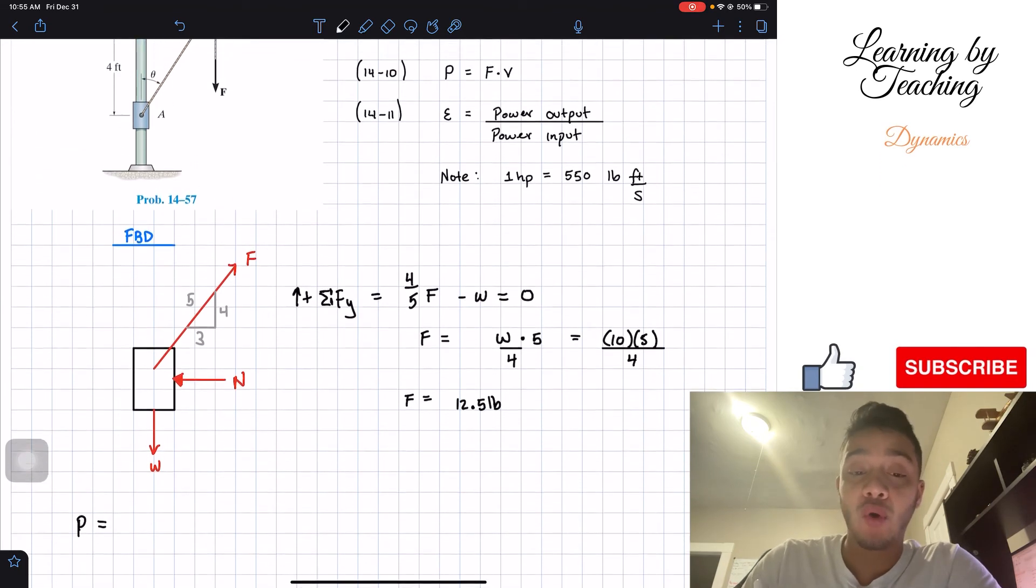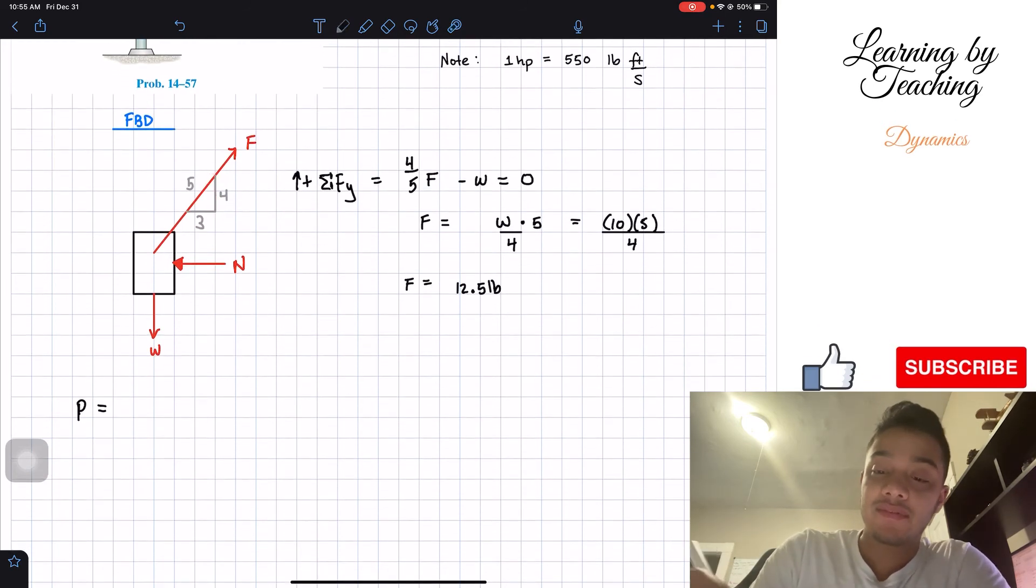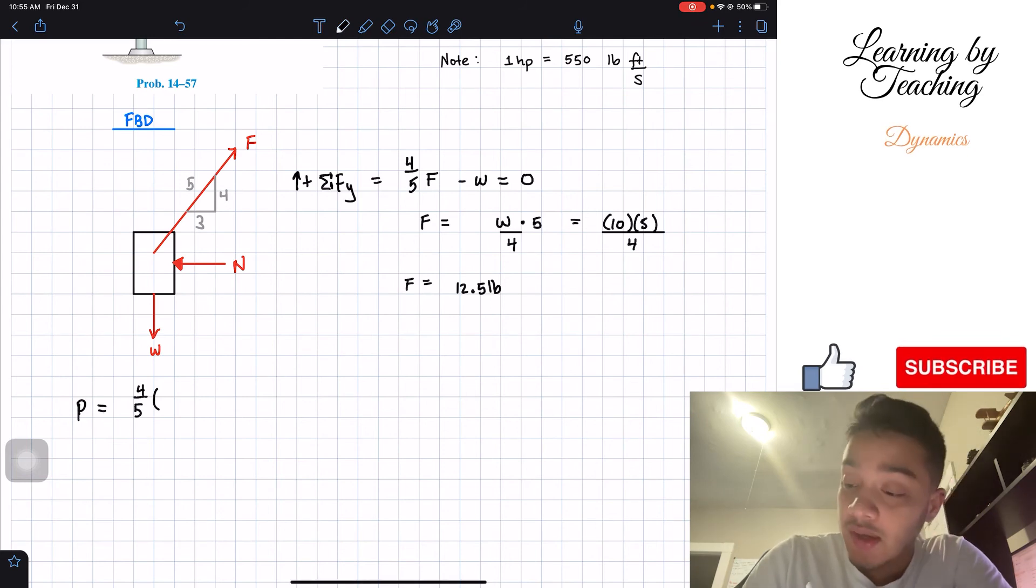Well, but what is the force that we need to find? It's not exactly just my force F. It's the amount of force that is in the direction of the velocity. The velocity is going upward, right? So we need the same direction for our force. And this force F has some component going in that direction, which is this 4 over 5 of my force F. So we got 4 over 5 of my force F. My force F is 12.5.